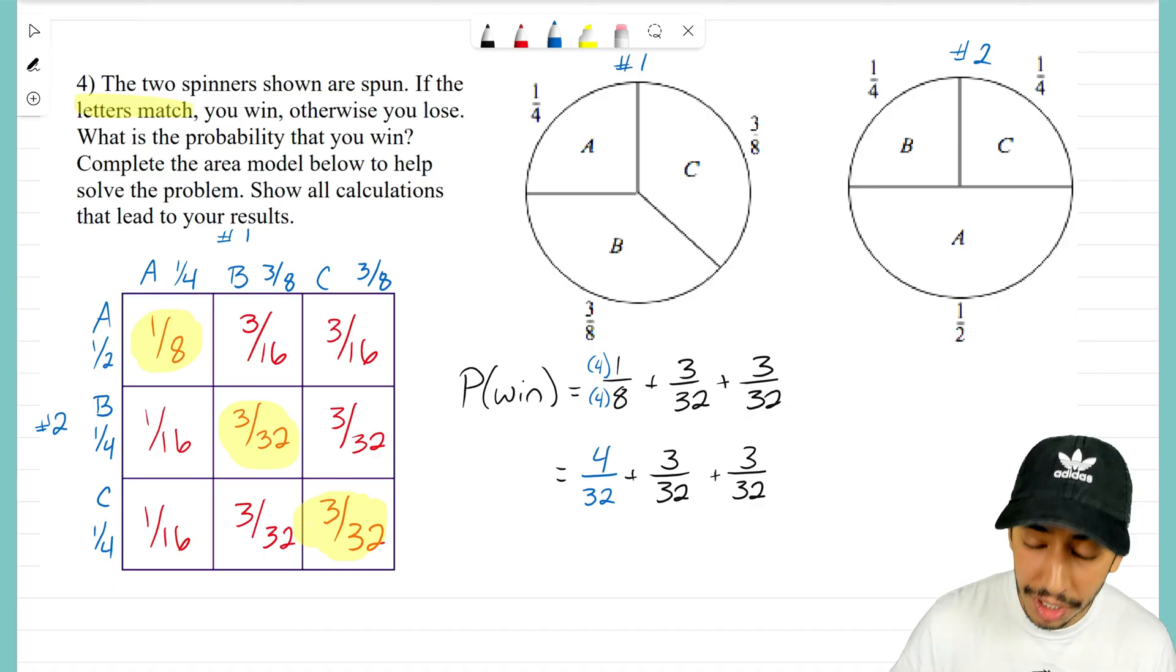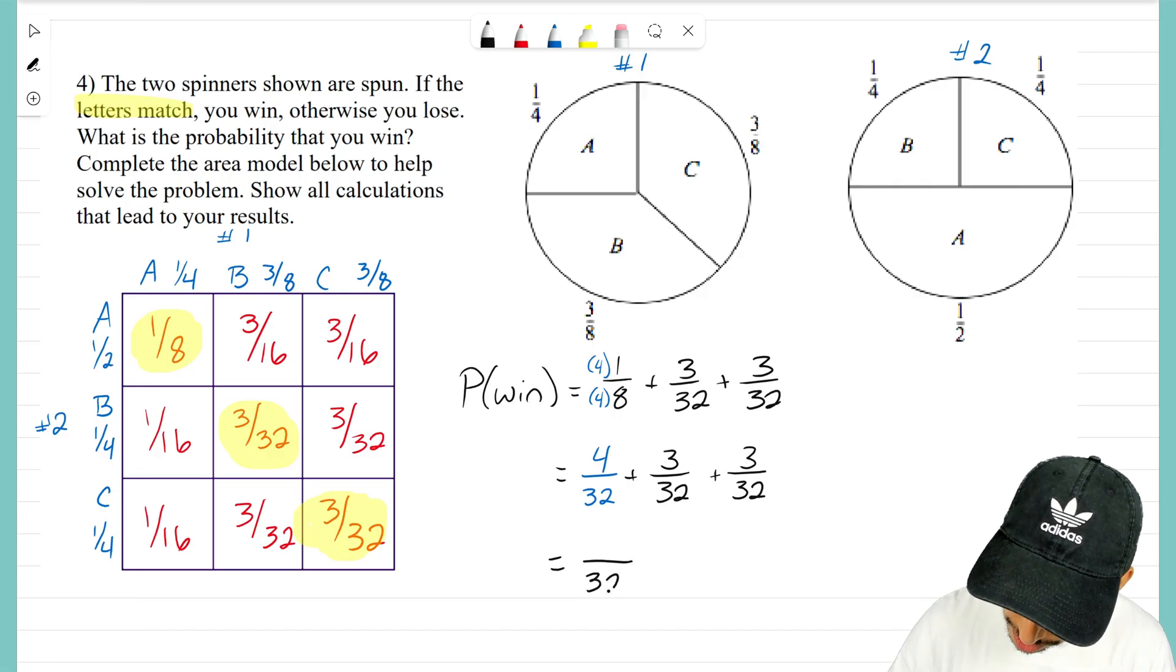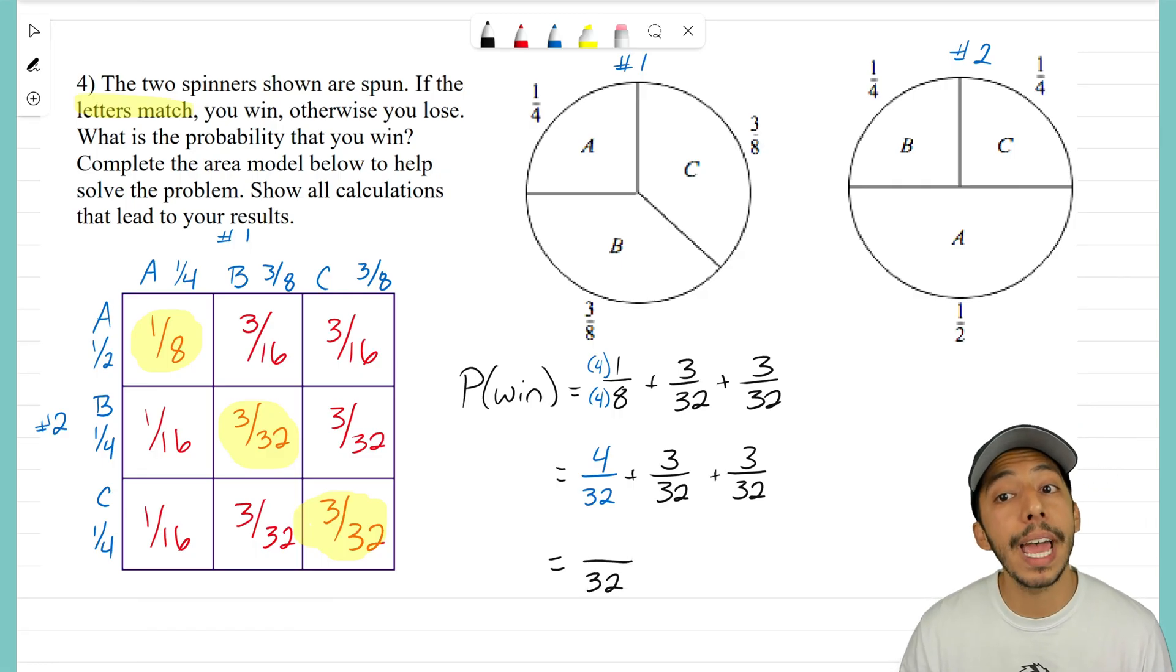At this point we can definitely add all three of those fractions together. Remember, when we add fractions we don't add the denominators, we just add the numerators—the ones on top. So 4 plus 3 is 7, 7 plus 3 is 10. So what's the probability of you winning this game? It is 10 out of 32.